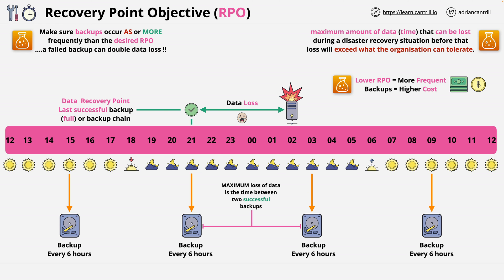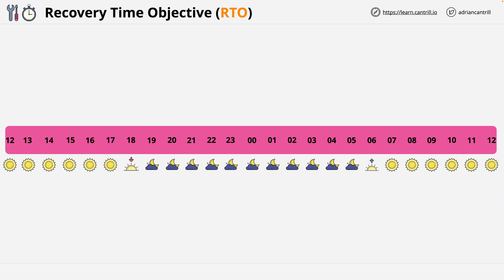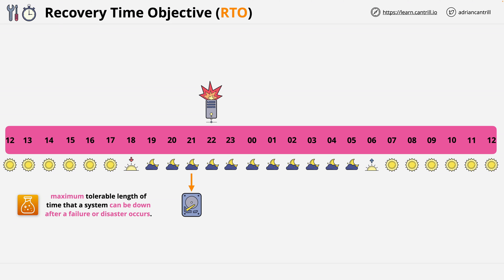Now let's cover Recovery Time Objective, or RTO. We're going to use the same example of a 24-hour period, starting at midday on one day, moving through midnight in the middle, and then moving to midday the following day on the right. For this example, I've moved the server failure to 10pm on day one, and the most recent backup was 9pm — one hour before the failure. This means, assuming the backup is a valid recovery point, that the data loss will be one hour. RTO, or Recovery Time Objective, simply put, is the maximum tolerable length of time that a system can be down after a failure or disaster occurs.